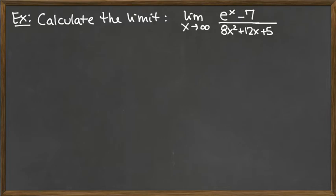Since this is L'Hopital's rule section, we are thinking perhaps L'Hopital's rule is going to be applicable, but we can't be certain until we actually assess what the indeterminate form is. So let's look at the top, e to the x minus 7.